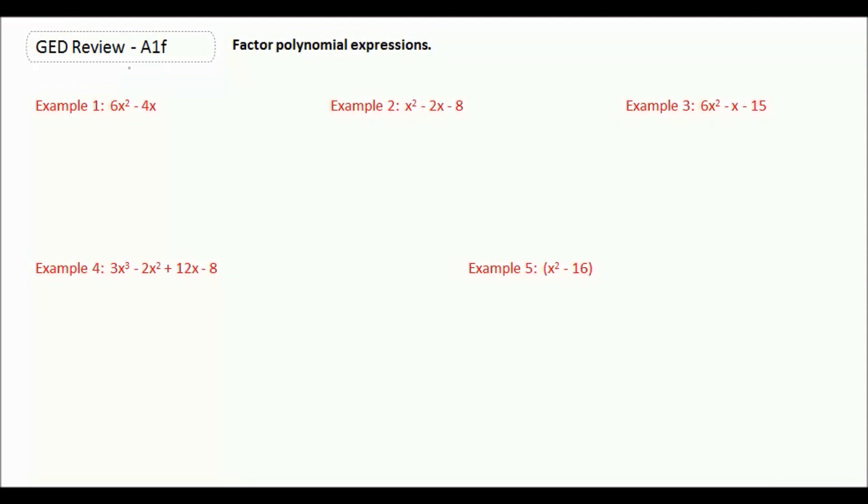So we're going to see what goes into both of our terms. We can pull out a 2, and we can also pull out an x. So what times 2x would give us 6x squared? Well, 2 times 3 gives us a 6, and x times x would give us the x squared.